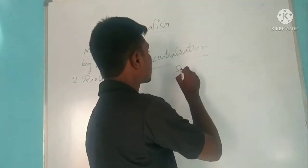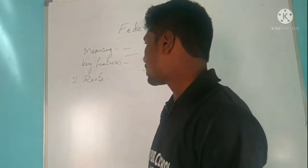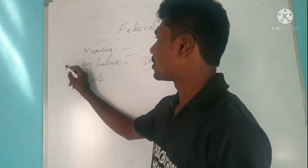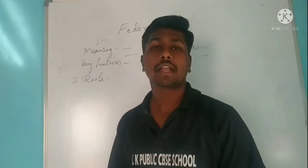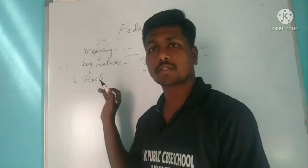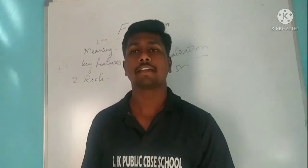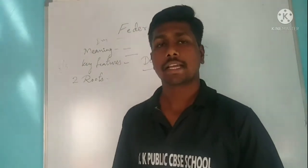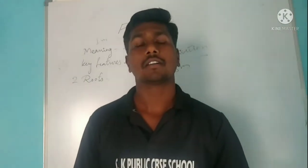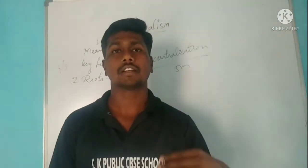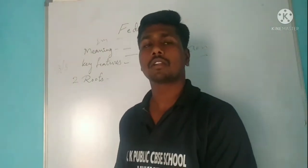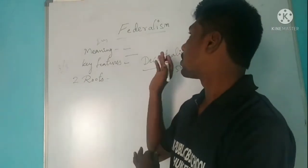Decentralization is a 5-mark question. The meaning of federalism is a 1-mark question, and key features is a 3-mark or 5-mark question. The two routes of creation of federation — coming together and holding together — carry 3 marks or sometimes 5 marks. How federalism is practiced in India is for 5 marks, and what makes India a federal country is also for 5 marks. This is the overall concept-wise weightage of federalism.